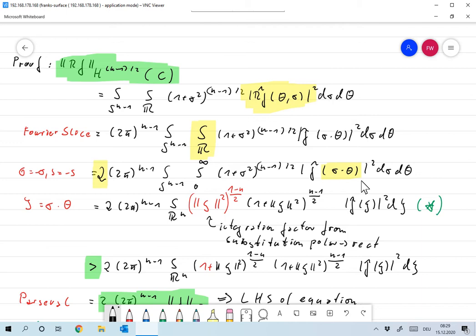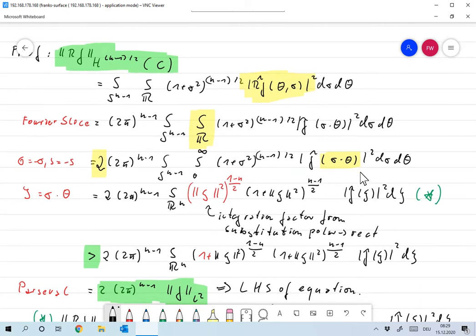Now we have sigma times theta over here, and next thing we've already done several times, let's go from polar coordinates, from sigma times theta, to rectangular coordinates. So we set psi equals sigma times theta, integrate instead of polar coordinates, we integrate over R^n, and the factor doesn't change. We get |f hat of psi|^2 now.